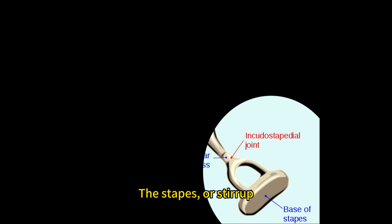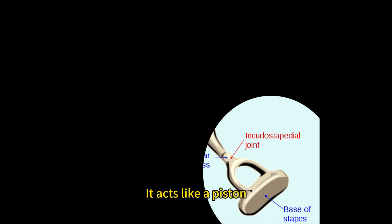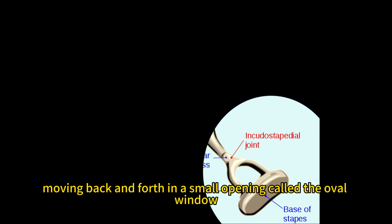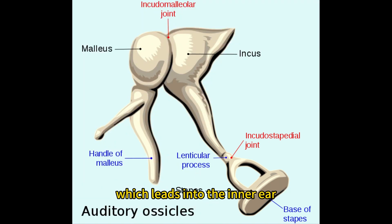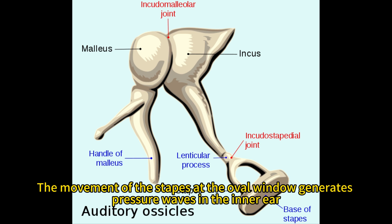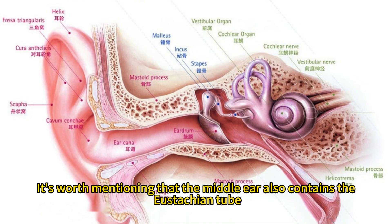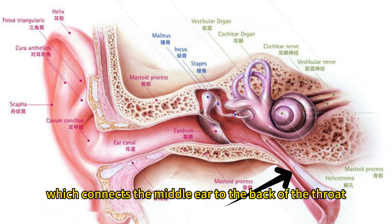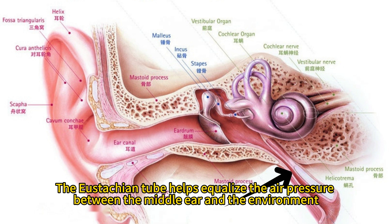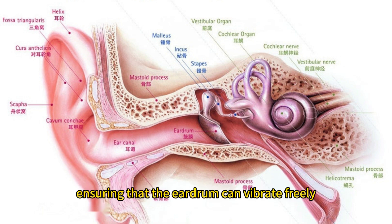The stapes, or stirrup, is the third bone in the ossicular chain, connecting to the inner ear. It acts like a piston, moving back and forth in a small opening called the oval window, which leads into the inner ear. The movement of the stapes at the oval window generates pressure waves in the inner ear, particularly in the cochlea, which is responsible for our hearing. The middle ear also contains the eustachian tube, which connects the middle ear to the back of the throat, helping equalize the air pressure between the middle ear and the environment, ensuring that the eardrum can vibrate freely.